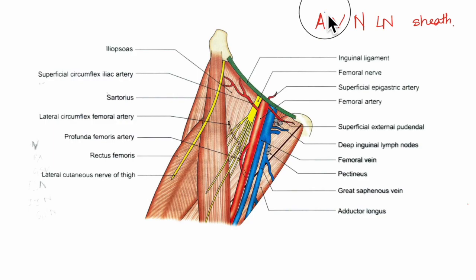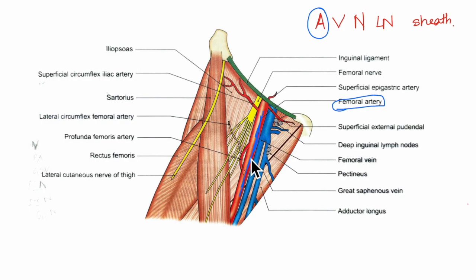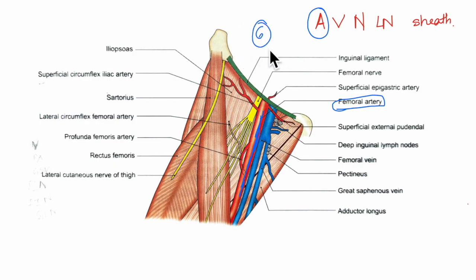The first structure is the femoral artery and its branches. The femoral artery travels through the triangle from its base at the mid-inguinal point to the apex of the triangle. In the triangle, the femoral artery gives off six branches — three superficial branches and three deep branches.